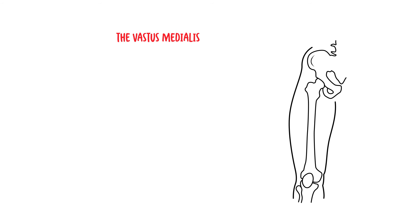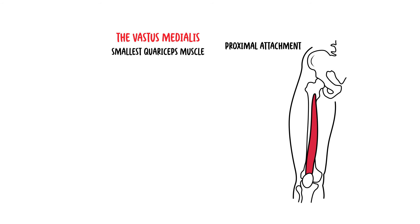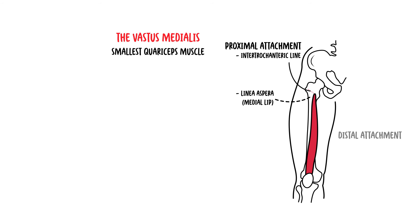The vastus medialis is the smallest of the quadriceps, and originates at the medial femur, near the intertrochanteric line, and the medial lip of the linea aspera of the femur. The vastus medialis then forms the quadriceps tendon, but part of the aponeuroses also attaches onto the patella. The vastus medialis counteracts the vastus lateralis by pulling the patella medially.